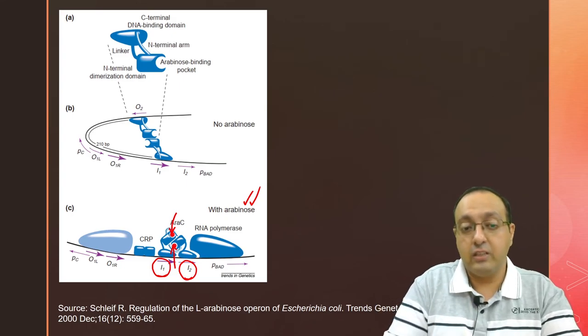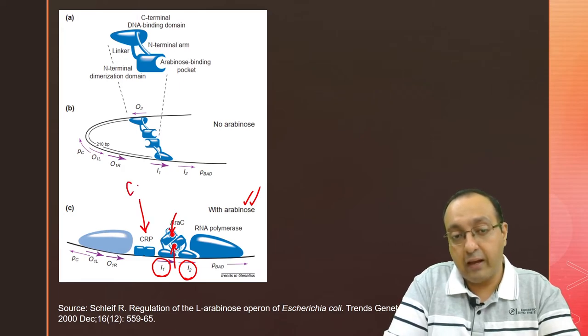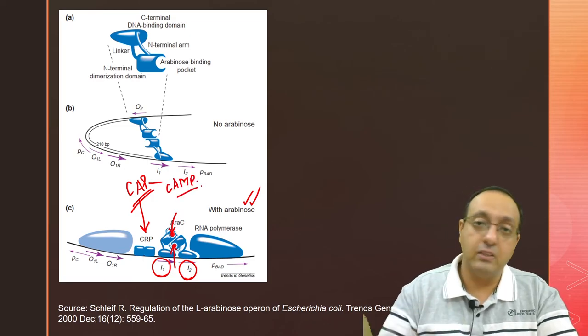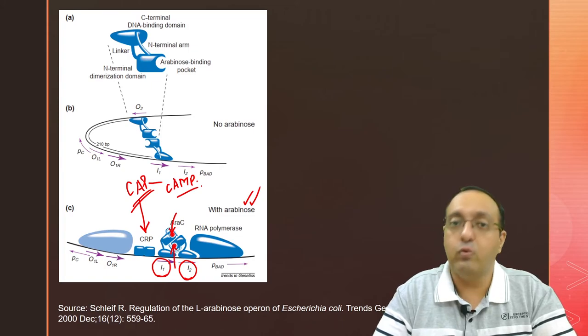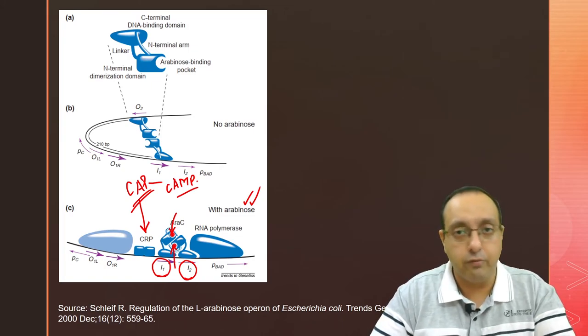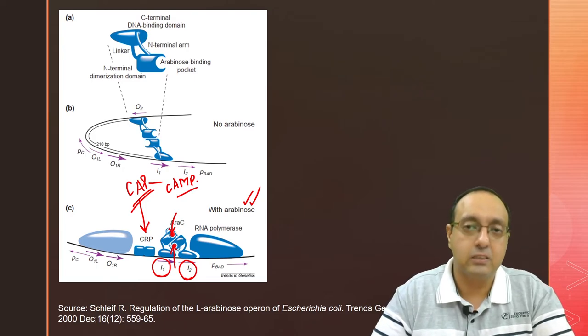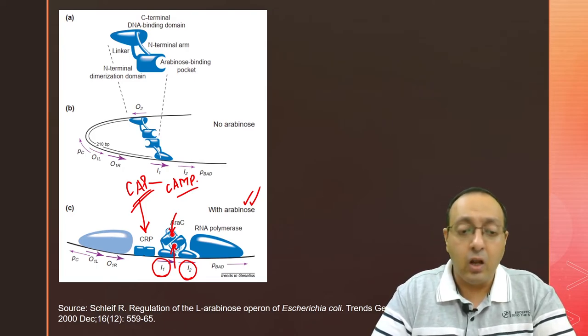I would also like to mention that just like lac operon, it is also subject to positive regulation by catabolite activator protein, which is activated by binding of cyclic AMP. Cyclic AMP is synthesized when there is very little glucose in the cell. It's kind of a hunger signal that exerts positive regulation on this operon.